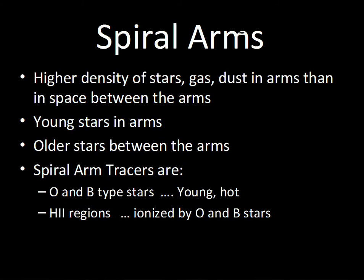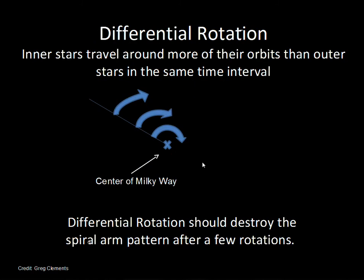We have what are called spiral arm tracers — objects that allow astronomers to quickly identify where the spiral arms are located. Those would be the very young, massive O and B type stars. We also see H2 regions in other galaxies that make it easy to identify spiral arms. In those H2 regions, O and B stars in the middle emit ultraviolet light that ionizes the gas; as electrons recombine with protons, one color given off in the visible spectrum is red, so these H2 regions glow bright red.